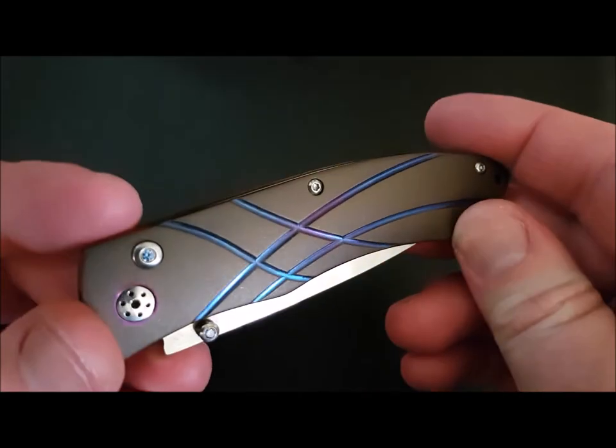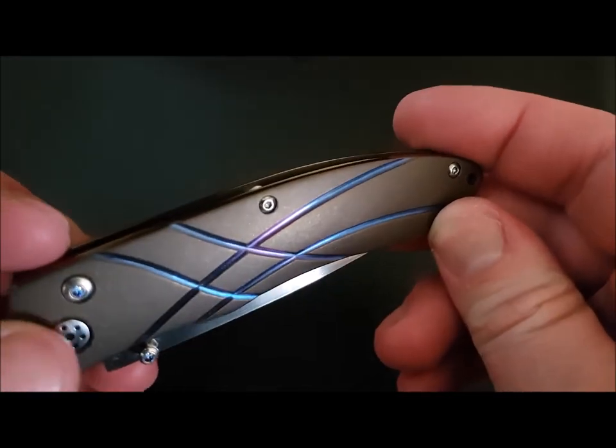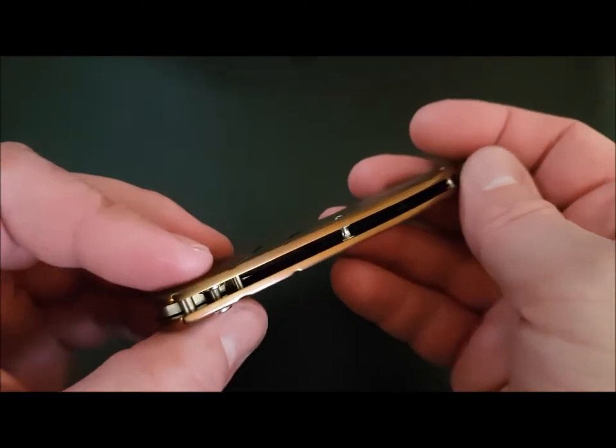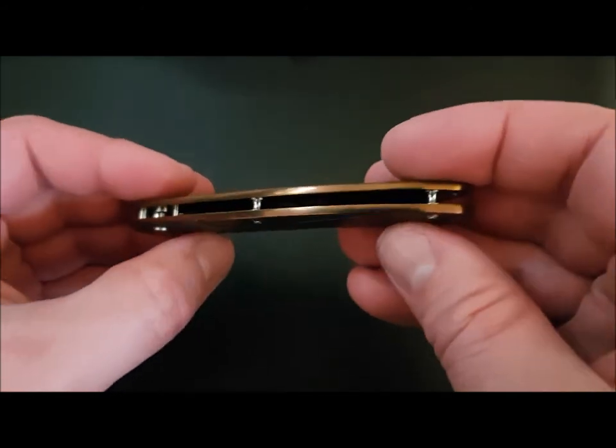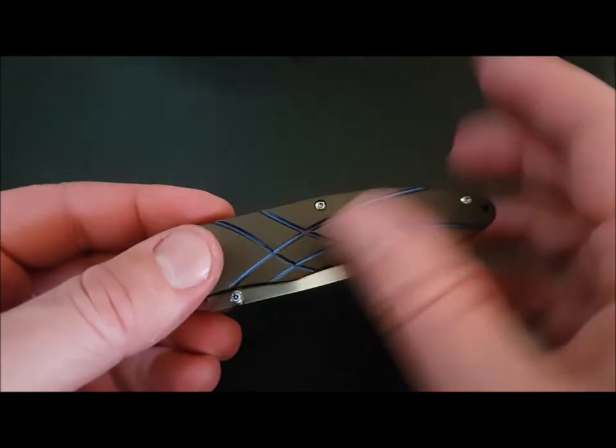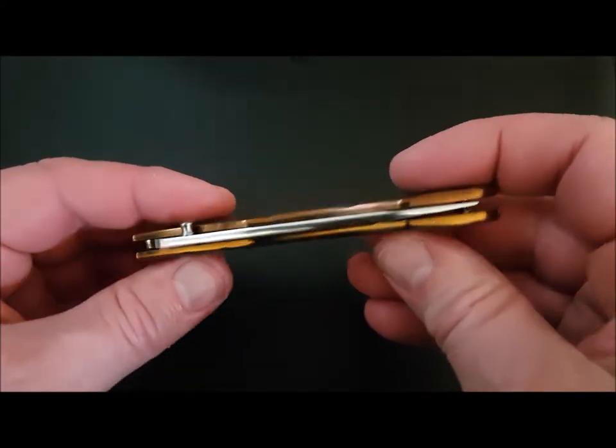And the tumbled area ended up with this deep matte bronze as you can see. And then the edges have a much more vibrant bronze because of the different finishes, tumbled versus polished. So both bronze, both anodized exactly the same time, just a different color and a different finish.